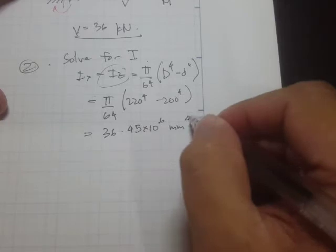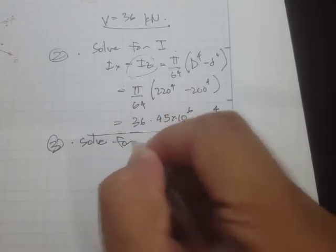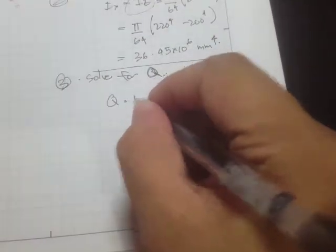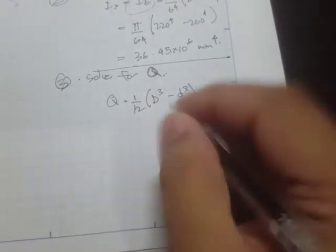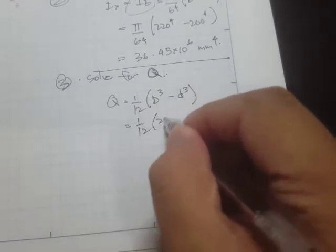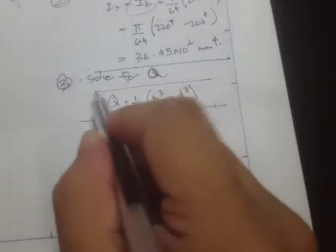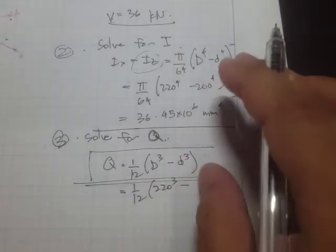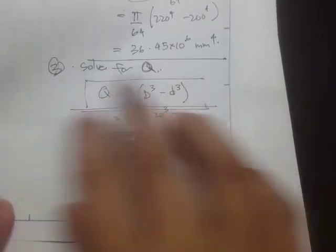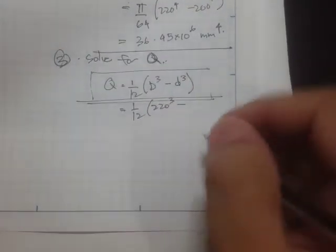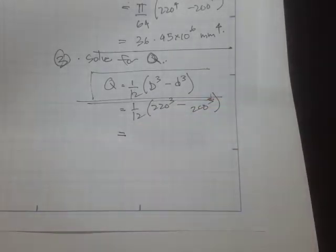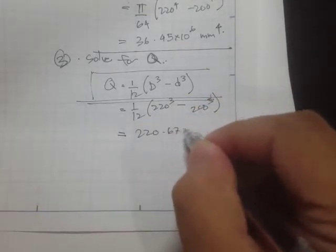Now we solve for the first moment of area, Q. For a hollow circular section, Q = (1/12)(D³ − d³). Substituting: (1/12)(220³ − 200³) = 220.67 × 10³ mm³. This equation is similar to the moment of inertia formula but gives the first moment of area for hollow sections.